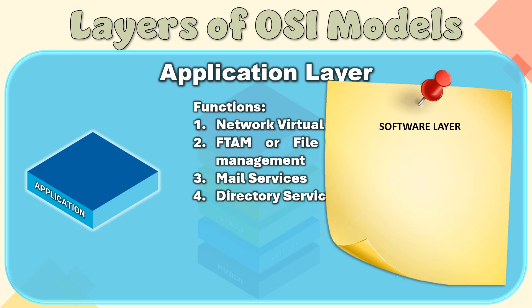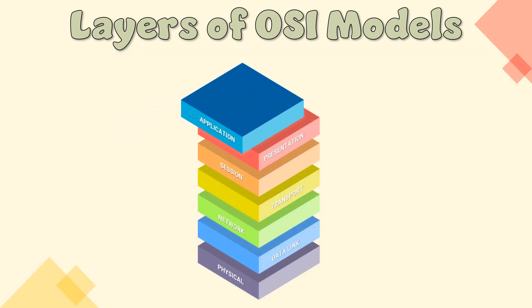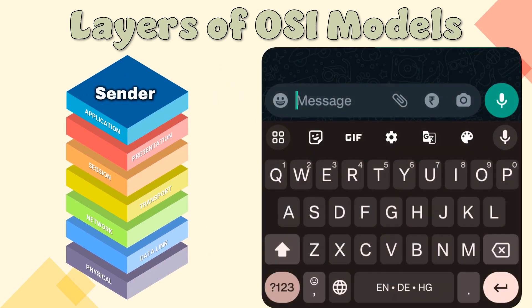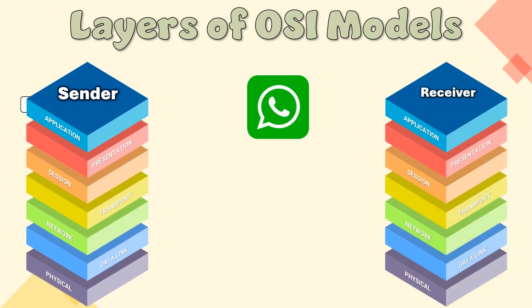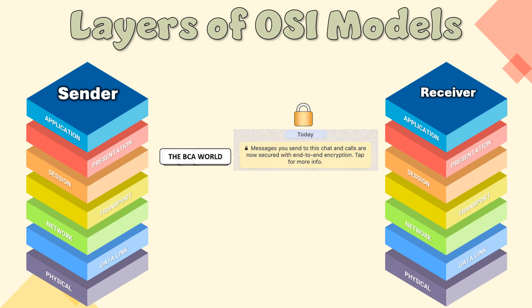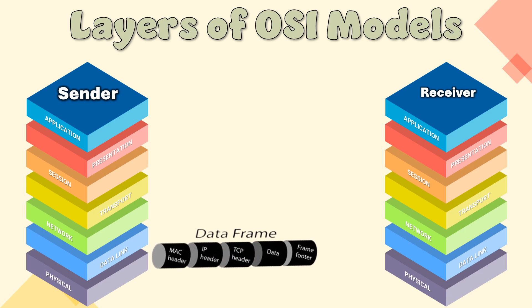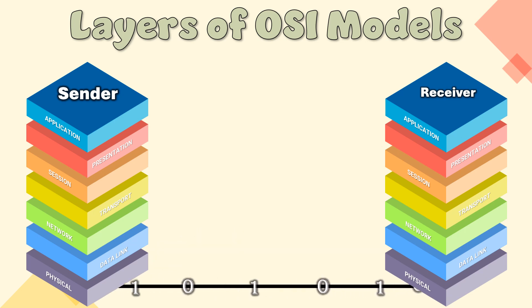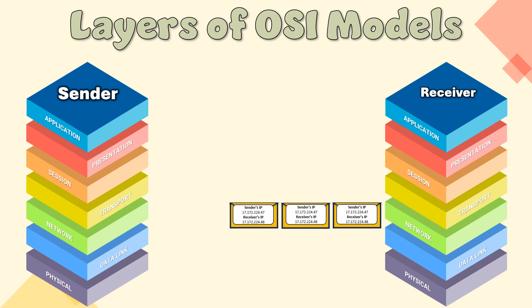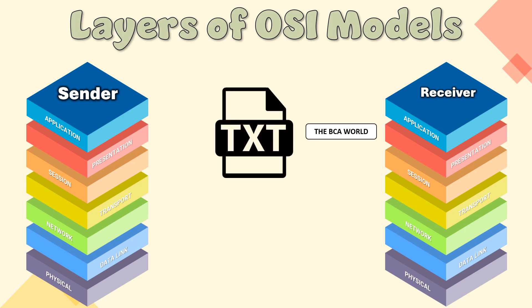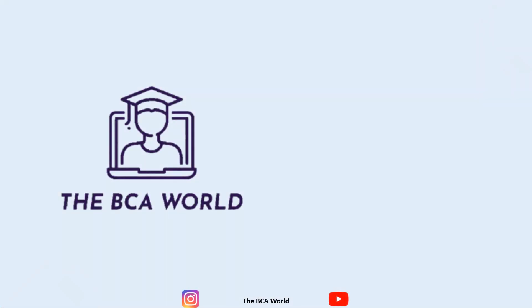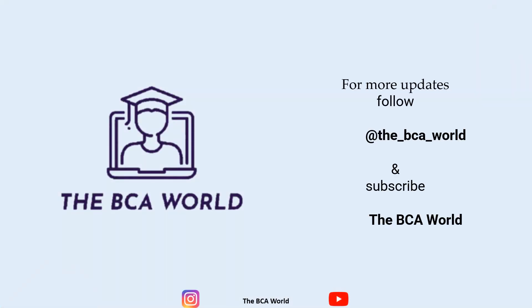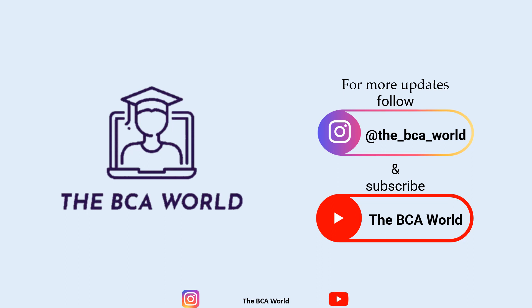Note: The application layer is a software layer, also known as the desktop layer, as it uses devices or protocols such as SMTP. Now let's see how the OSI model works. For more updates, follow BCA World on Instagram and subscribe to BCA World on YouTube.